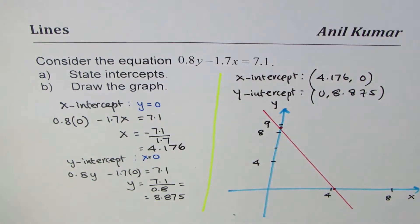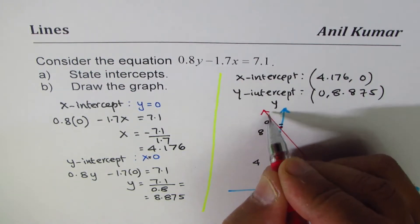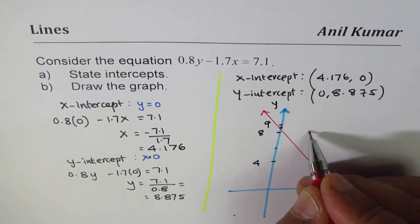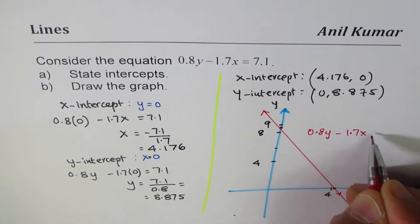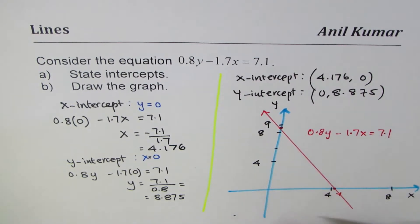I get a line, and that's the graph of my line. So let me put arrows on both ends. This graph is for the line 0.8y minus 1.7x equals 7.1.